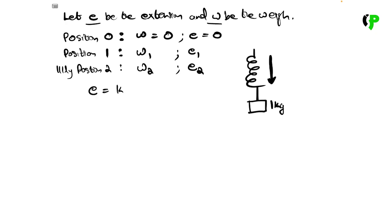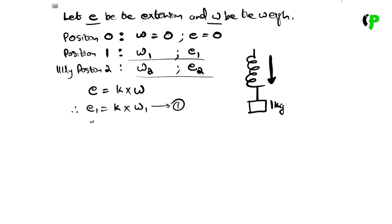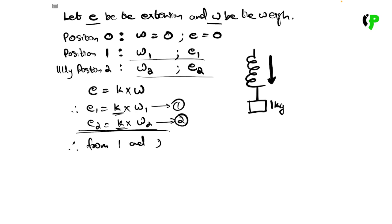Extension is equal to k into W, where k is the constant of proportionality. So for position 1: E1 equals k into W1, and for position 2: E2 equals k into W2. From equations 1 and 2, k is the constant of proportionality.